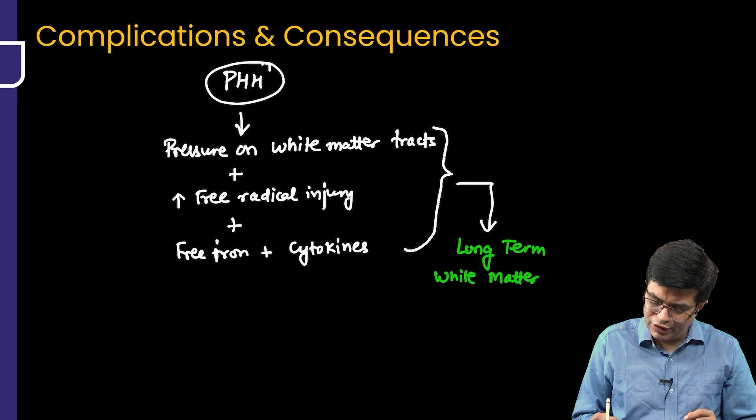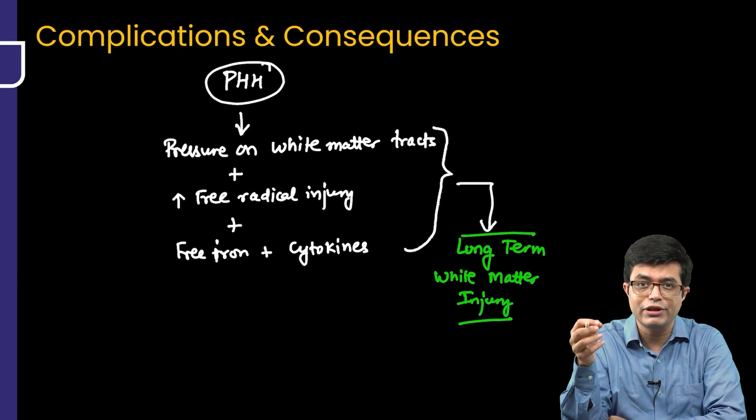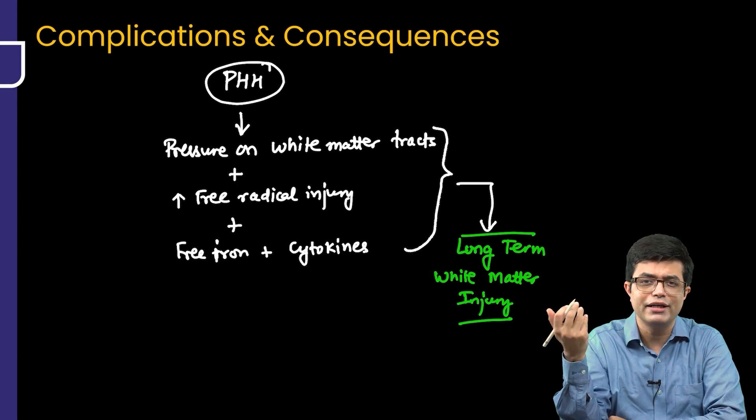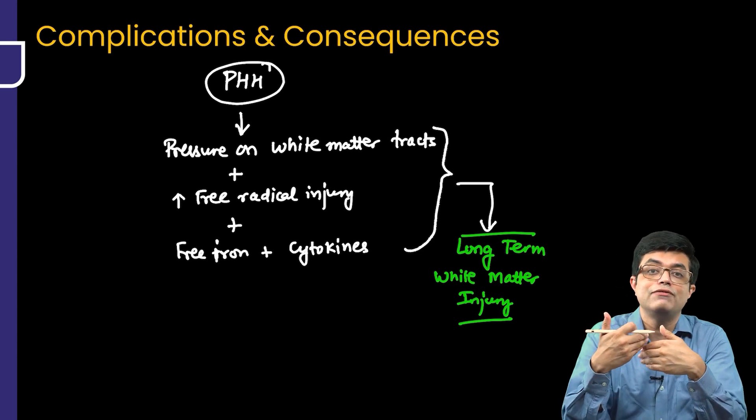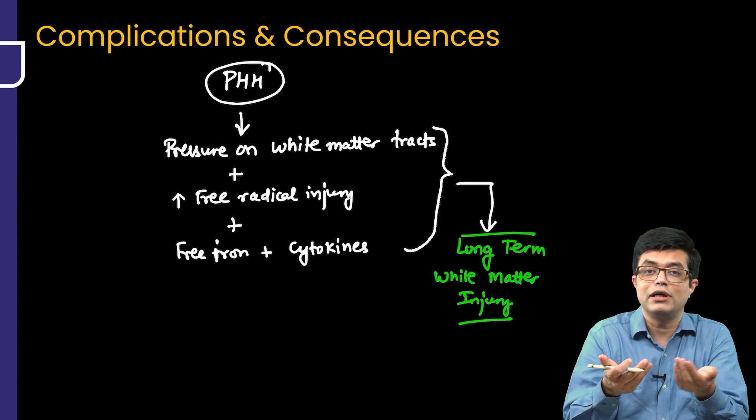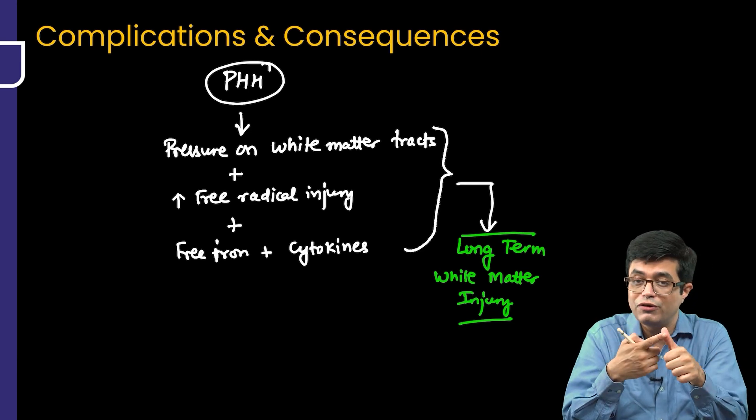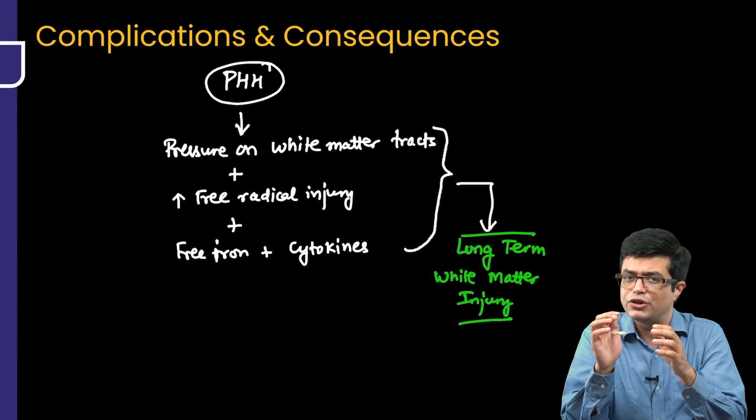Combination of these three or four things are going to cause long term white matter injury. It may or may not be as severe as periventricular leukomalacia, but often if it goes unchecked and you don't intervene and hydrocephalus is not stopped, hydrocephalus is not relieved by CSF tapping or by shunts, you will find that eventually features similar to cerebral palsy which you see in PVL can also develop. That is why PHH needs to be watched out for and PHH needs to be managed sometimes with active intervention.